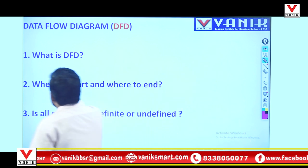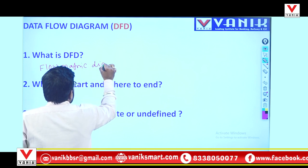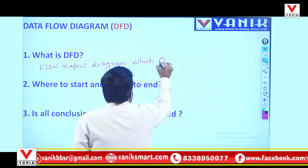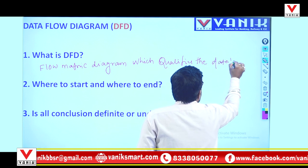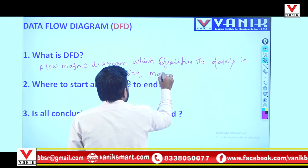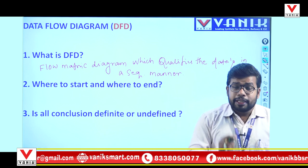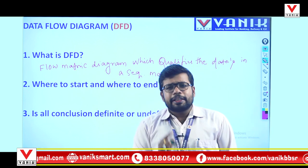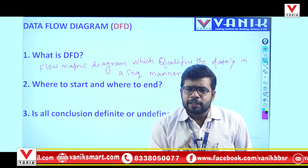So what does this mean? There will be a flow metric diagram, under which data will be provided to us, which qualifies the data in a sequential manner. All the data given to us must follow a sequential manner, and that data will be provided through a flow metric diagram.